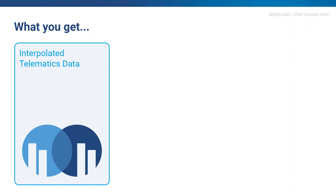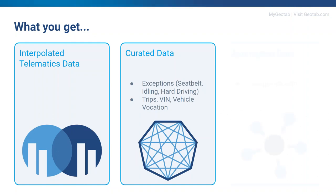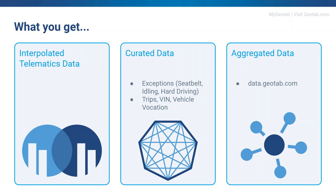As part of the data science package you get raw data, a curated data set, and aggregated data. The interpolated data takes your raw data from the Go device and enriches it — you get GPS data, engine data, and accelerometer data. With engine and accelerometer data, those raw data points typically do not have GPS coordinates associated with them. So we look at the GPS before and after every accelerometer and engine log, and we determine where that log was generated and give you the coordinates. This makes it easy to plot where vehicles are buckling or unbuckling seatbelts, or where harsh driving events are happening.